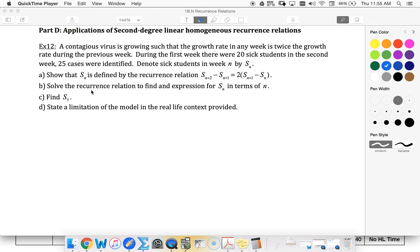We've got a contagious virus growing at the rate that in any week is twice the growth rate of the previous week. The first week we have 20 sick students. In the second week we've got 25 cases identified. So sick students in week N we're denoting with S sub N. Show that S sub N is defined by this recurrence relation.